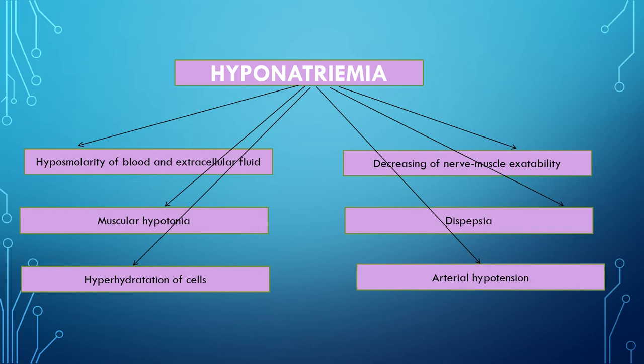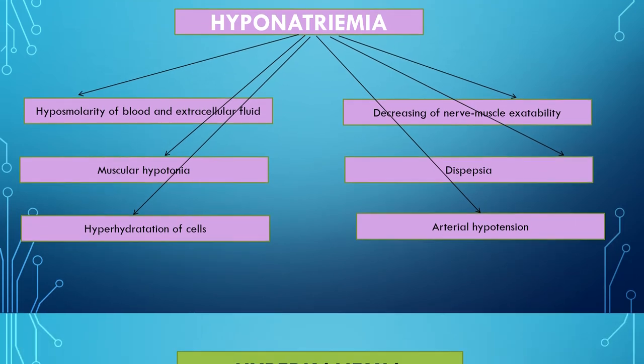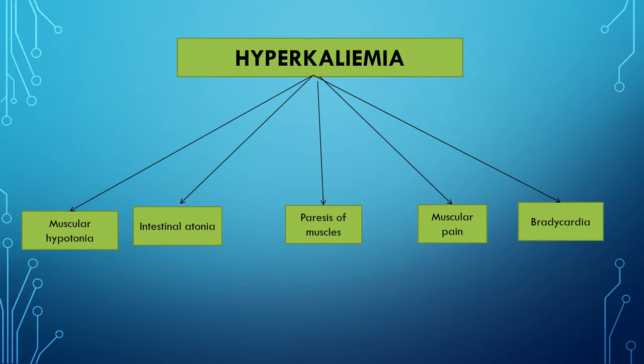Decreased blood concentration of sodium leads to myasthenia, weakness, and decreasing arterial pressure, even collapse. This is explained by decreased influence of sodium on adenylin action. As a result of considerable loss of sodium, disturbance of heart activity, muscular adynamia, and decreased appetite develop. Hyperkalemia is an increase of the potassium concentration in blood plasma above 6 mmol/L.